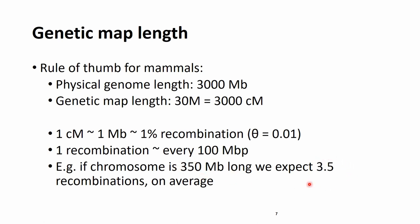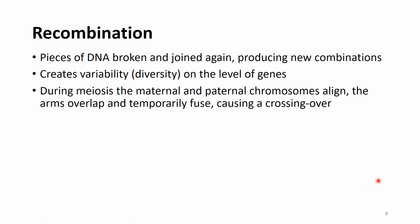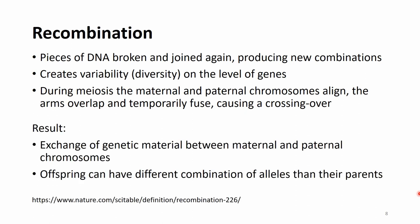We have talked about recombinations already a lot, so perhaps it is time to explain what these are exactly. Recombinations happen when pieces of DNA are broken and joined again, producing new combinations. They actually create variability on the genomic level. During meiosis, the maternal and paternal chromosomes align, the arms overlap, temporarily fuse, creating a so-called crossing over. As a result, we observe exchange of genetic material between paternal and maternal chromosomes, so the offspring has different combinations of alleles than their parents.